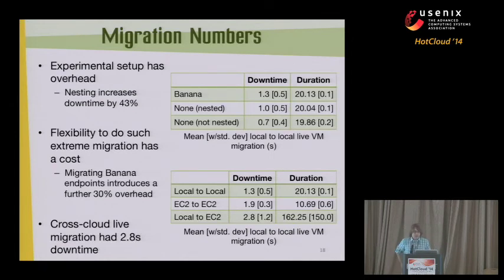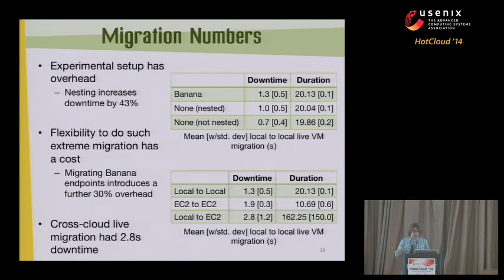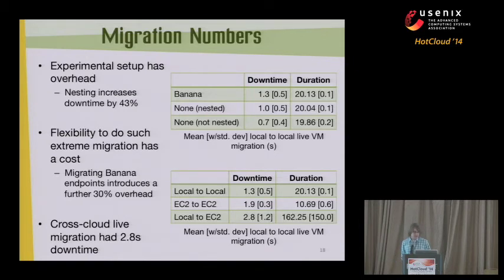We did compute some more migration numbers. These are preliminary numbers and we don't have an optimized environment. A lot of the numbers are hard to interpret because our experimental setup brings in overhead - we're using the Xen blanket layer for nested virtualization, which already increases live migration downtime by 43%. The flexibility we're getting for doing this migration is not for free: migration of the banana endpoints gives a further 30% overhead. But the main point is that we illustrated the possibilities of stretching and the opportunities for improving performance. We completed the cross-cloud live migration with 2.8 seconds of downtime.